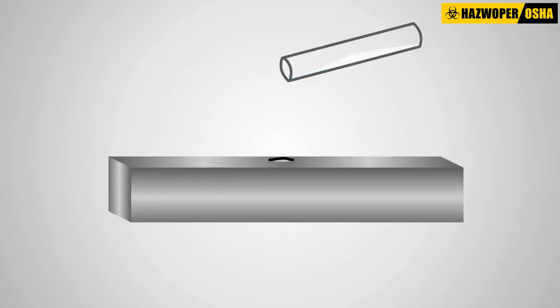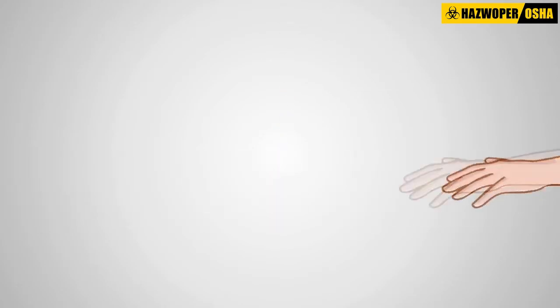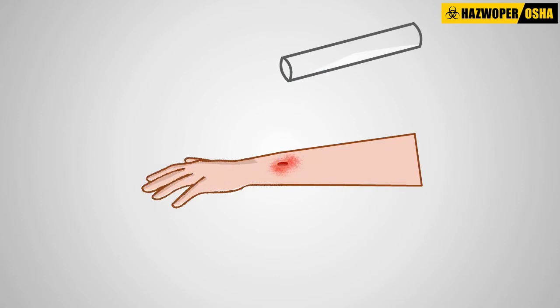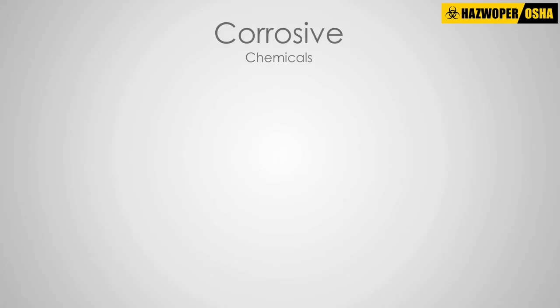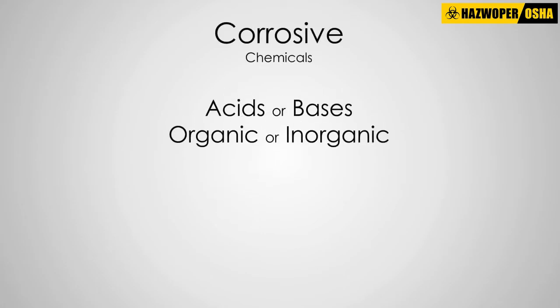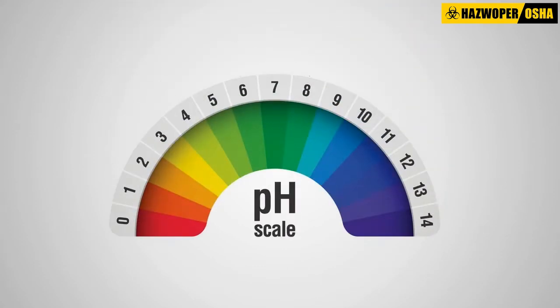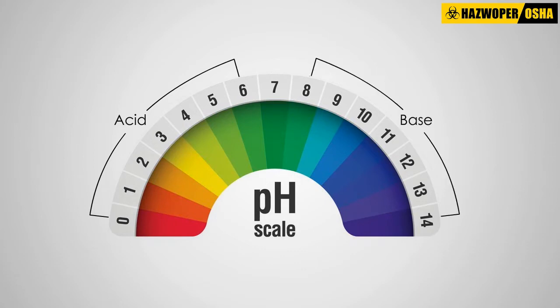Corrosive chemicals are strong enough to corrode steel, which makes them strong enough to corrode many weaker substances as well, such as human tissue. Corrosive chemicals can be either acids or bases, organic or inorganic. An acid is indicated by numbers 0 to 6 on the pH scale, and a base is indicated by numbers 8 to 14. The number 7 indicates a neutral substance that is neither an acid nor a base.